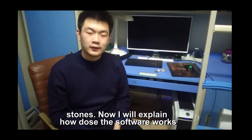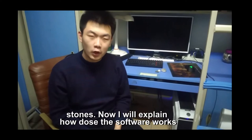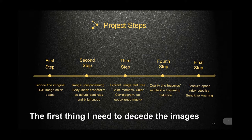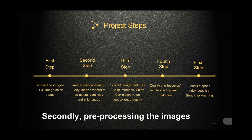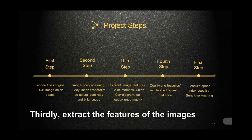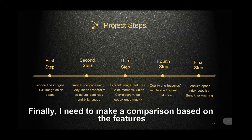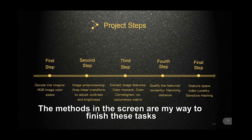Now I will explain how the software works. To finish the task, I need to do several things. First, I need to decode the images. Secondly, preprocess the images. Thirdly, extract the features of the images. Then find a way to quantify these features. And finally, make a comparison based on the features. The methods on the screen are my way to finish these tasks.